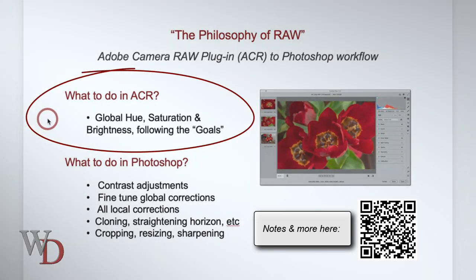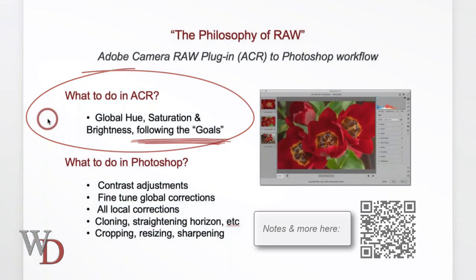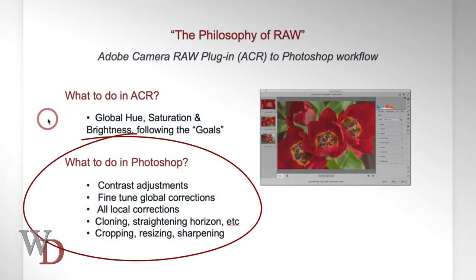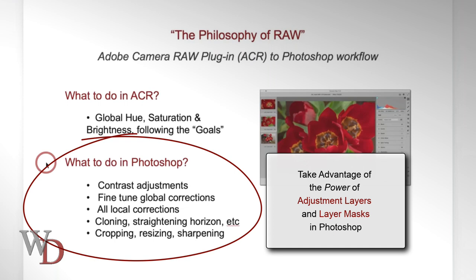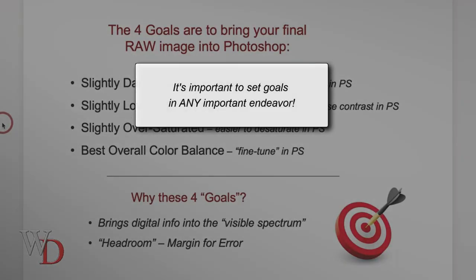In ACR, I suggest making as many global hue, saturation, and brightness corrections as you can, following the four goals we'll talk about shortly. In Photoshop, I suggest doing all contrast adjustments, localized corrections of any kind, fine-tuning, cropping, and sharpening, taking advantage of adjustment layers and layer masks.